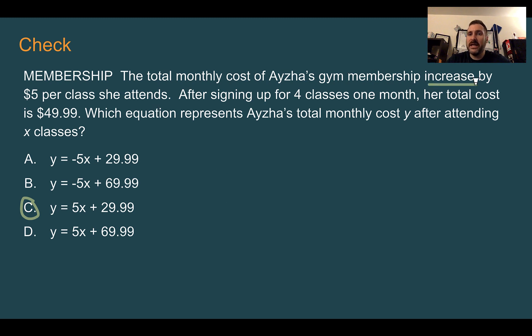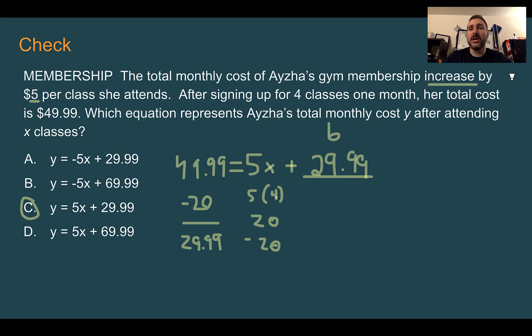How we can figure this out: it increases by $5, so positive 5 for each class, and we know that her total was $49.99. What we don't know is what the original cost was. But we know that if she signed up for 4 classes, so this is 4, she paid $20 for classes. If we take off our $20 from our total, she must have started at $29.99. So our b value $29.99 plus $5 per class gives us our total. So c would be our correct answer.